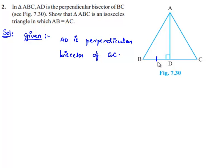We can say that as AD is the perpendicular bisector of BC, BD will be equal to DC, and angle ADB and angle ADC will be 90 degrees.